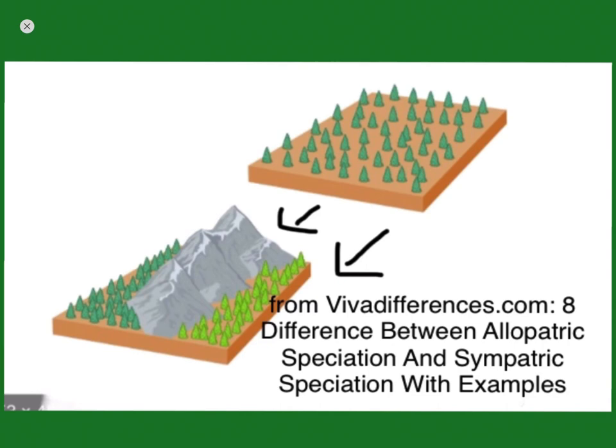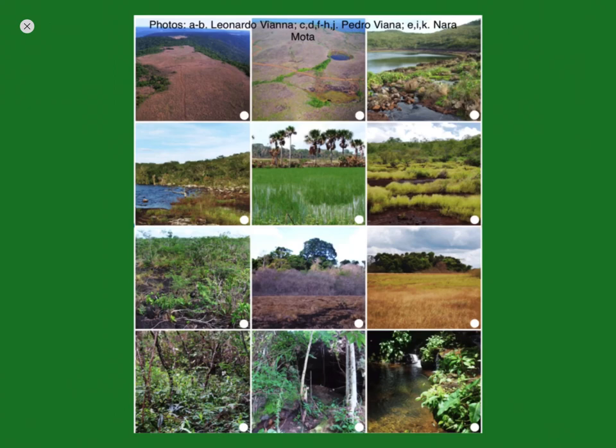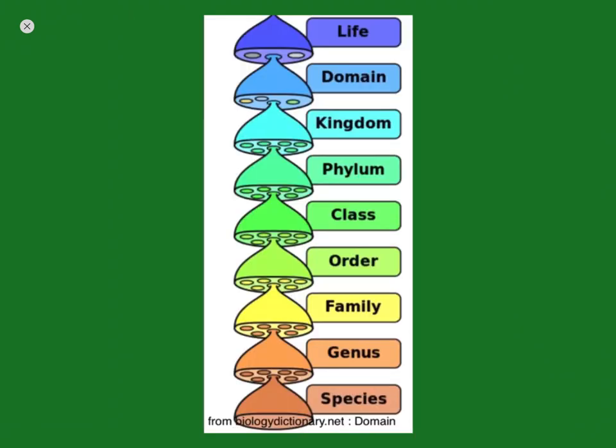Different environmental conditions developing in the two regions where two different populations live would also contribute to them differentiating from each other, because then the two groups would have to adapt to two different environments and would therefore adapt in different ways. Species created in this way could continue differentiating until they become different genera or even different families, as well as higher clades.